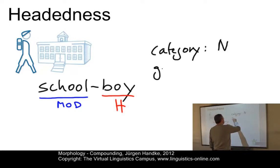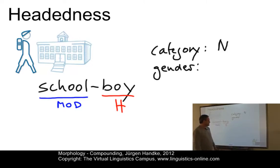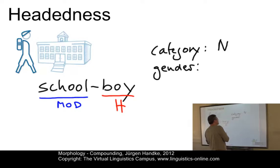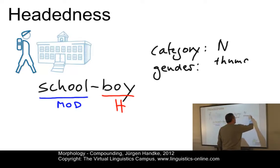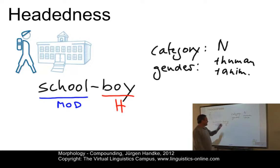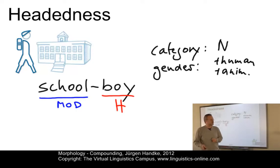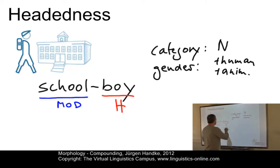The head also determines gender. Now, gender in present-day English is a difficult issue. We can draw a distinction between animate, inanimate, and human versus non-animate. We clearly know that 'boy' is human and animate. If we insert this item into a relative clause, we have 'the schoolboy who' and not 'the schoolboy which', because 'who' is related to 'boy', whereas 'which' would be related to 'school'. So 'boy' must be the head.